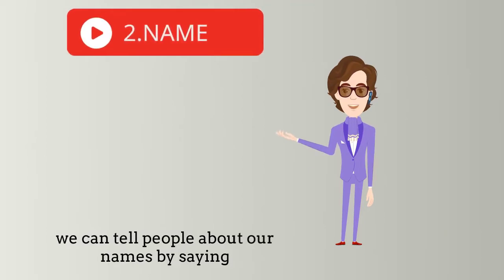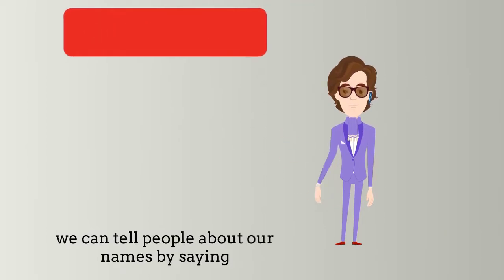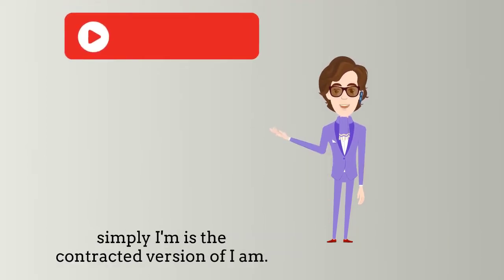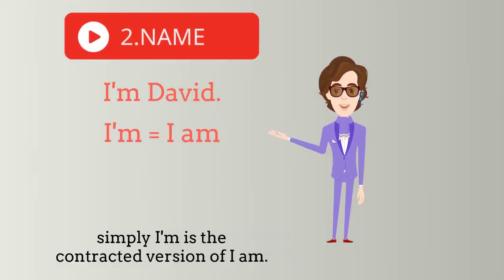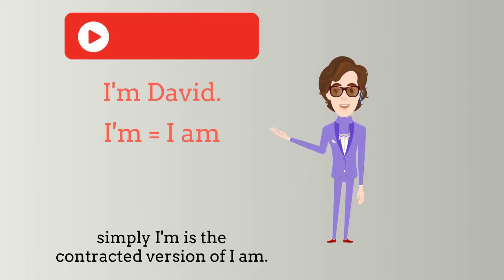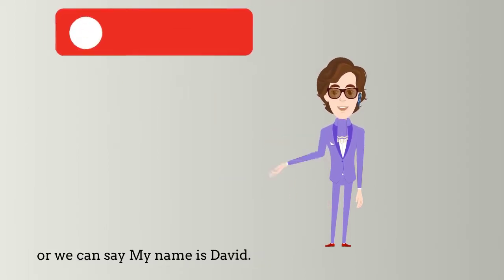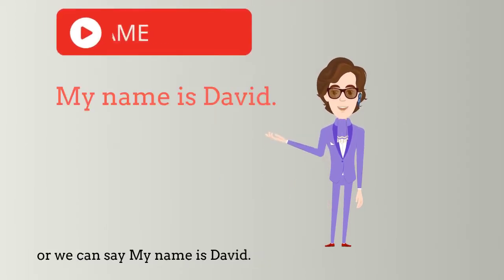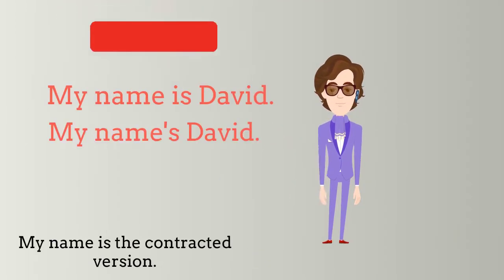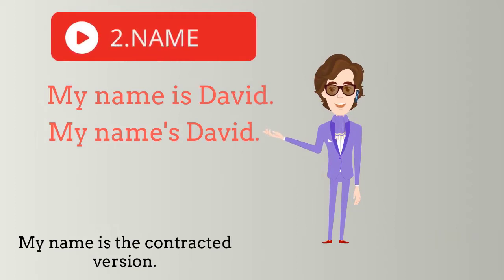We can tell people about our names by saying simply 'I'm David' — the first M is the contracted version of 'I am'. Or we can say 'My name is David', where 'My name's' is the contracted version of 'My name is David'.